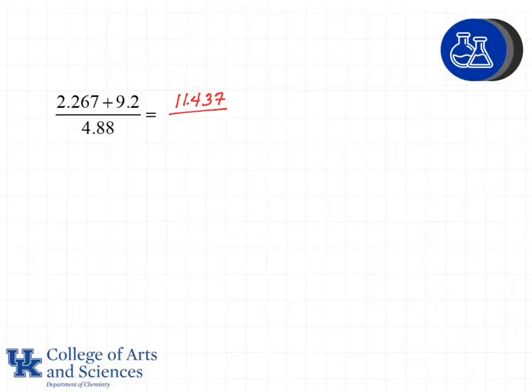We go back to the values involved in the addition and we see that we have three decimal places in the first value. We only have one decimal place in the second value, which means the result of that step in the calculations must only have one decimal place.